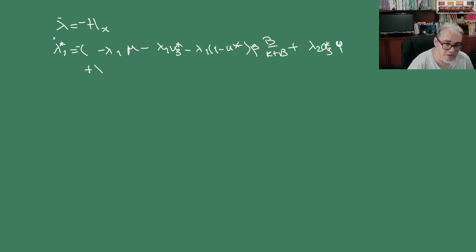Vamos escribiendo esto. Esto es menos lambda 1 mu menos lambda 1 u3 estrellita menos lambda 1 (1 menos u1 estrella) beta b sobre k más b más lambda 2 u3 estrella pi S, sin la S estamos derivados de todas las componentes de la X. Más lambda 3 por (1 menos u1 estrella) p beta sobre k más b más lambda 4 (1 menos u1 estrella) por (1 menos p) beta b sobre k más b.